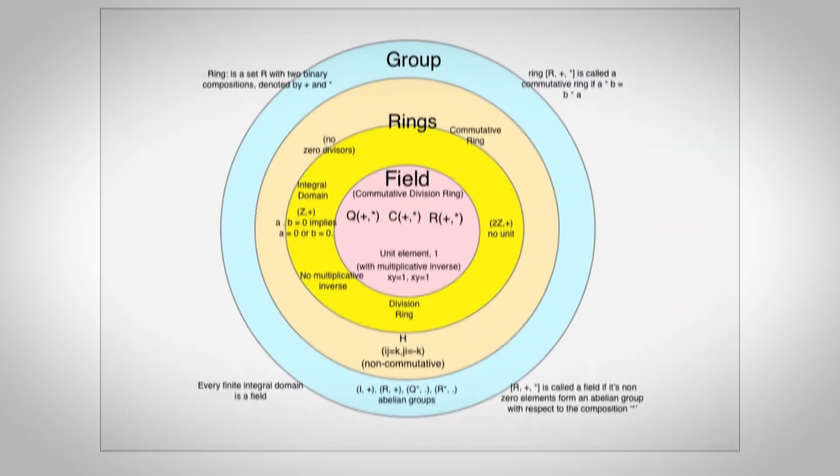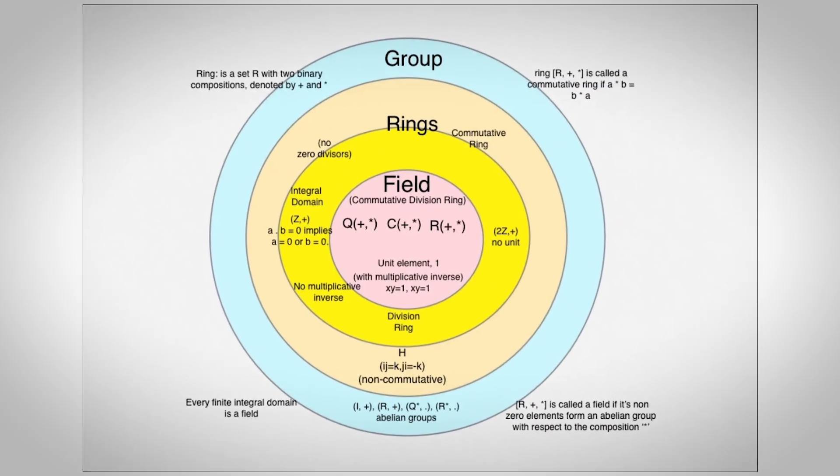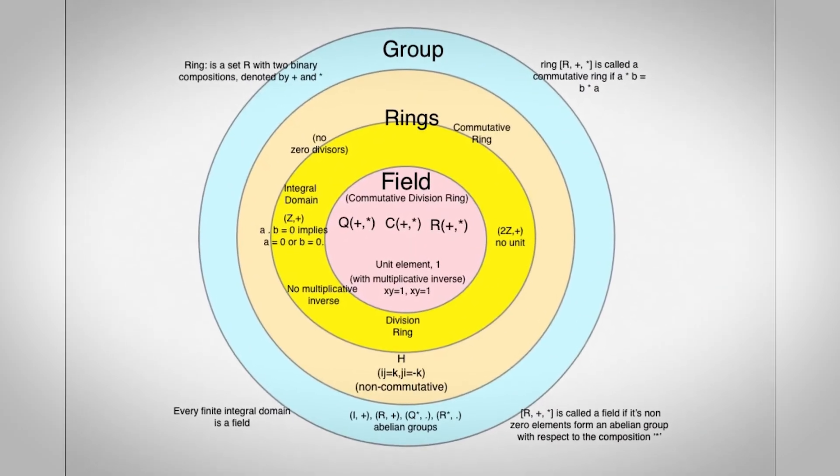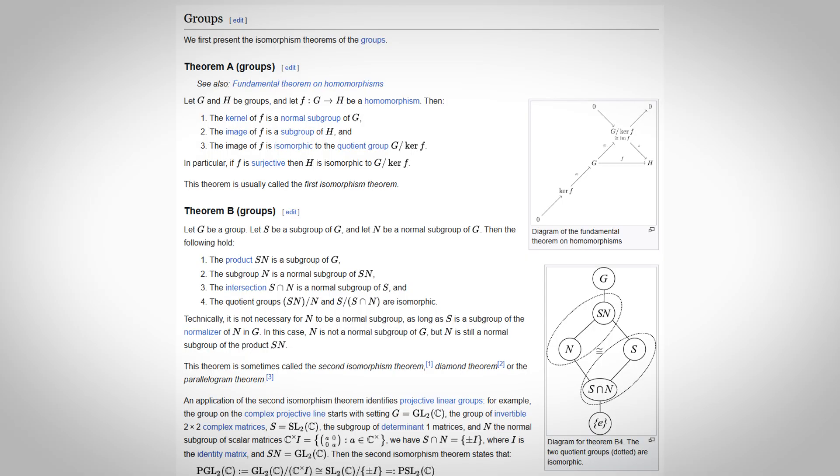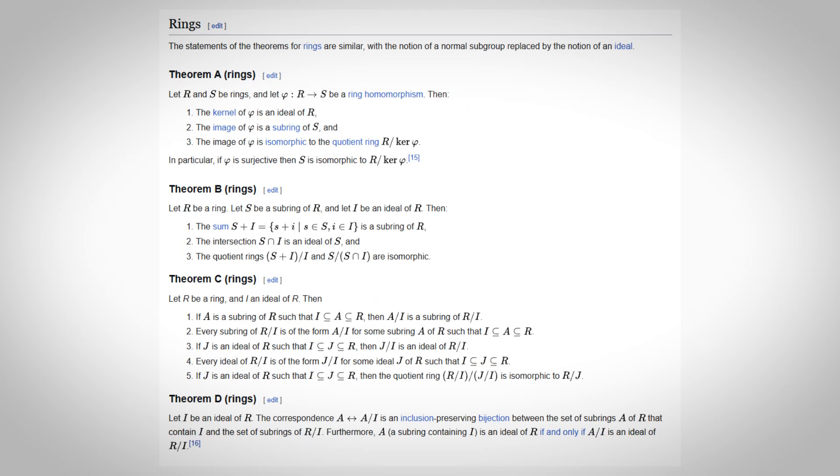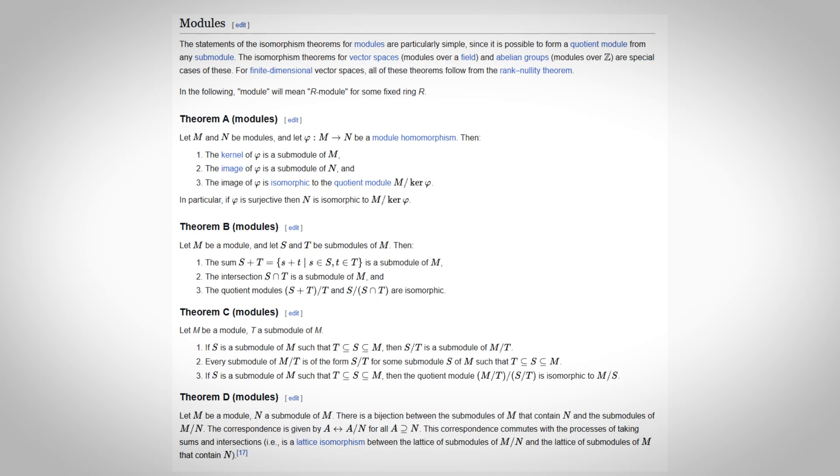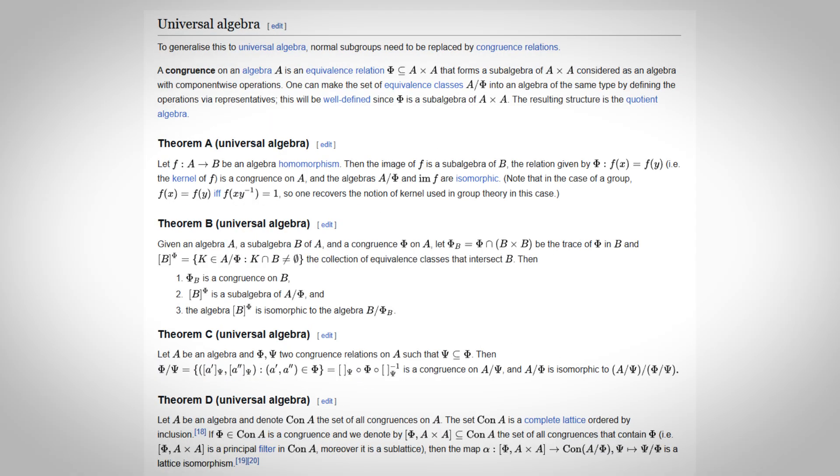Isomorphism theorems. The isomorphism theorems appear in groups, rings, vector spaces and other algebraic structures and they all describe how quotient structures and substructures interact. I can't be bothered to explain all of these to you because again, it would take too long, but pause the video if you want to see.